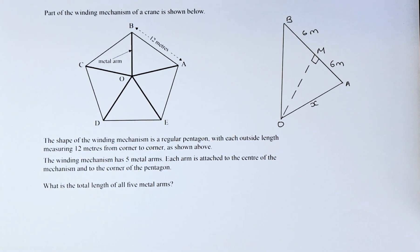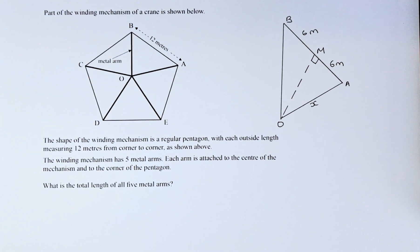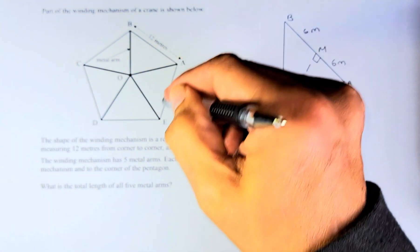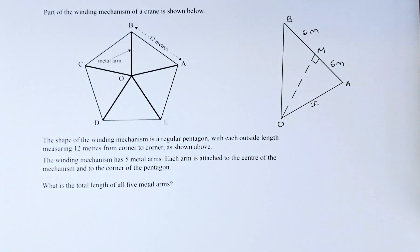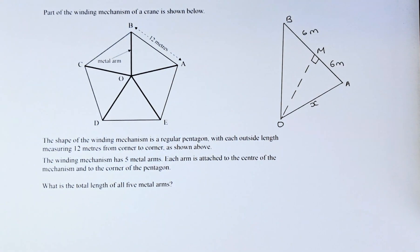let's read the question. Part of the winding mechanism of a crane is shown below. The shape of the winding mechanism is a regular pentagon with each outside length measuring 12m. So all of them outside are 12m from corner to corner as shown above. Remember, this is a regular polygon, meaning they have the same length and the same angle.